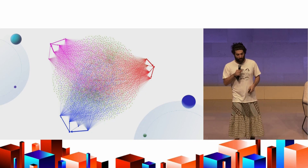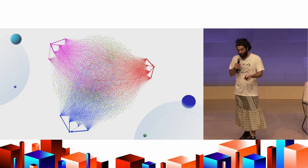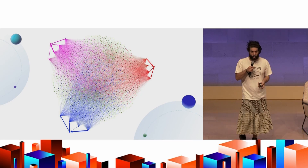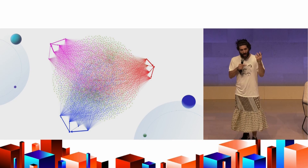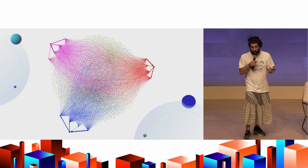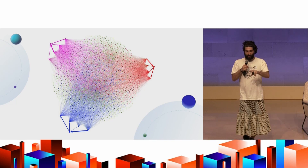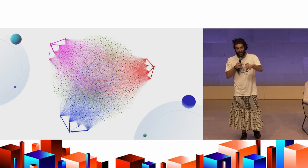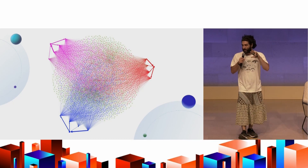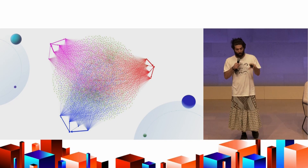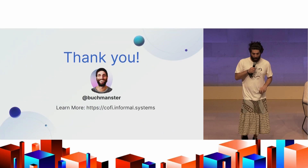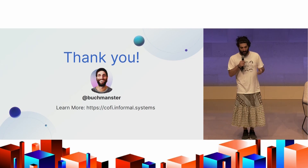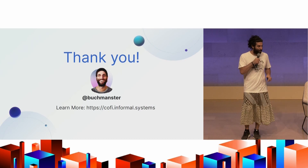Ultimately, you put this all together and you get something like this — based on real data, simulated with three different liquidity sources. One is fiat, one is crypto, and one is mutual credit — that's the holy grail. Mutual credit is communities being able to issue their own currency to discharge their debt. You get this stunning visualization of how everything flows in the network so that as much debt as possible can be cleared with the least amount of money, while optimizing over and respecting everyone's preferences for which currencies they actually want to use. Thank you so much. I'm Buckminster. You can learn more at cofi.informal.systems, and check out the white paper when it's out.